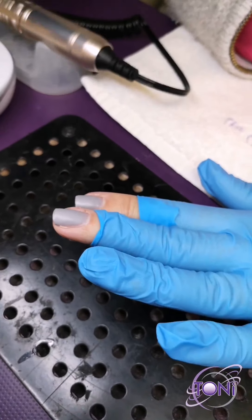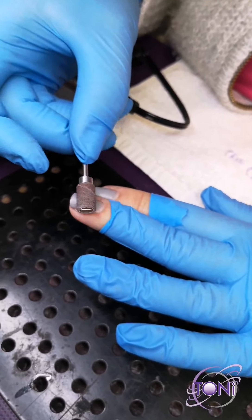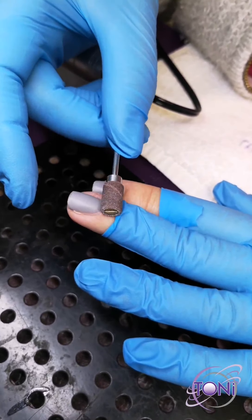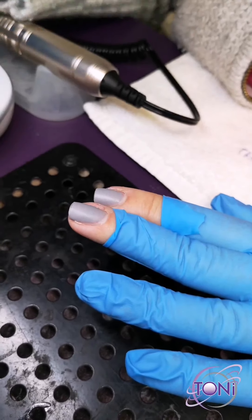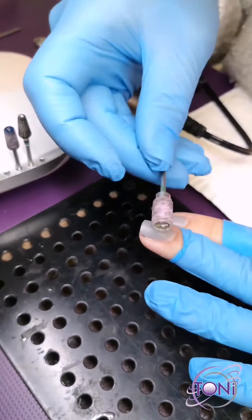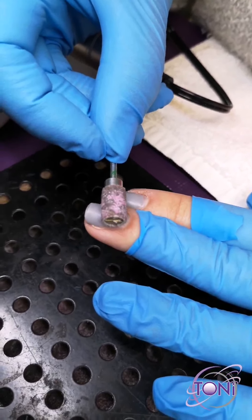Traditionally most people would reach for an arbor band to take the gel polish down. This is not going to be your best choice and in fact it's going to cause you a lot of grief because you're going to end up going through multiple arbor bands. Here is what it looks like after you try to file off gel polish.